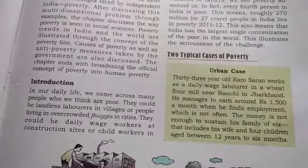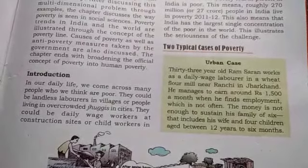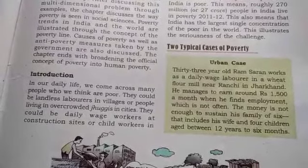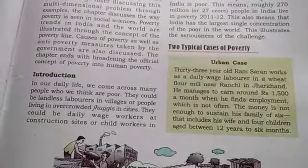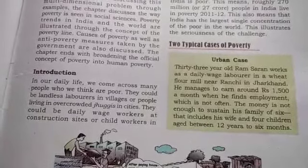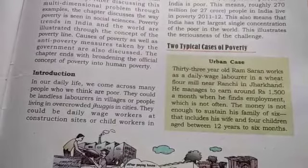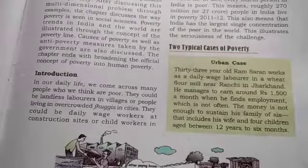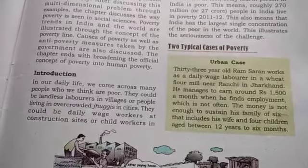Urban case: Ramsharan is a daily wage laborer in a flour mill near Ranchi in Jharkhand. He earns around Rs. 1500 per month when employed. He supports his family of six persons, besides sending some money to his elderly parents. His wife and son also work, but none of his four children can attend school.